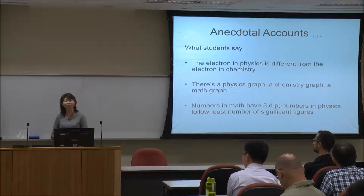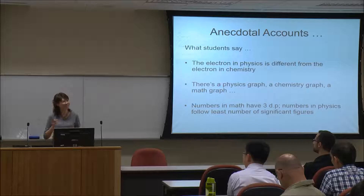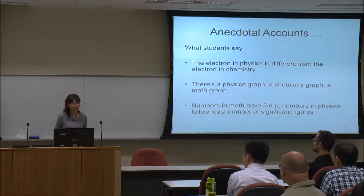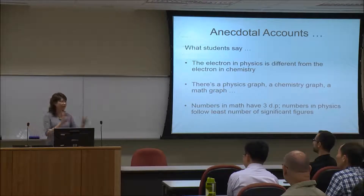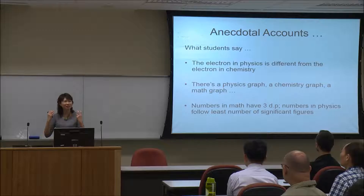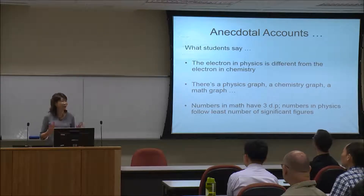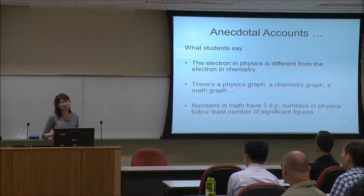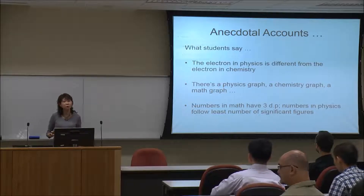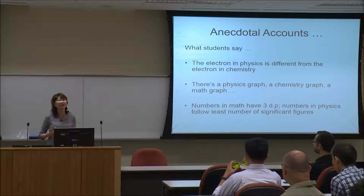One thing that a chemistry colleague told me was that a first-year degree student asked him: 'Is the electron in physics the same as the electron in chemistry?' And when I was teaching, students always told me that the physics graph is different from the chemistry graph, which is different from the math graph — they have different 'nationalities' in that sense. The same goes with numbers: in physics we ask them to calculate physical quantities, and they say, 'Math says 3 decimal places, physics says least significant figures — can't you guys make up your mind?' All this really has to do with representations and the language of science itself.